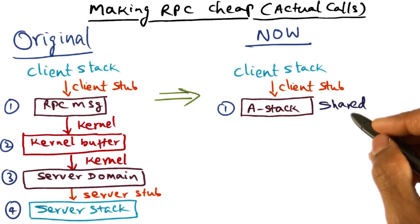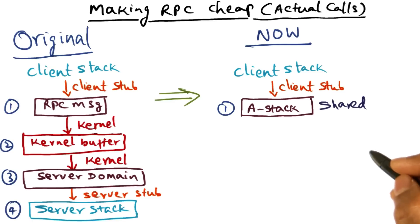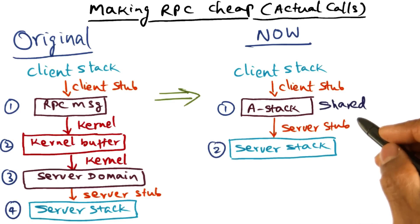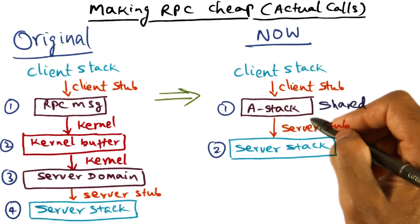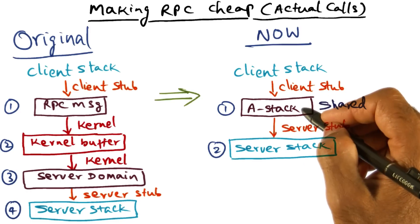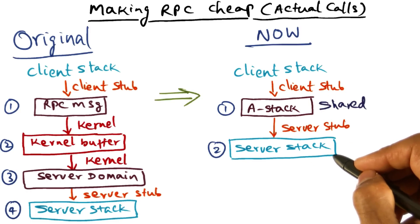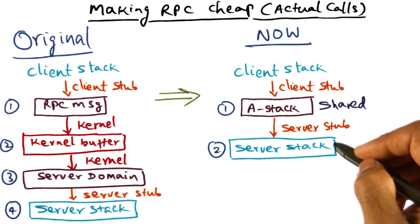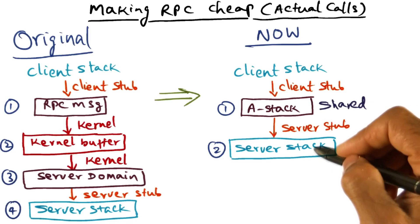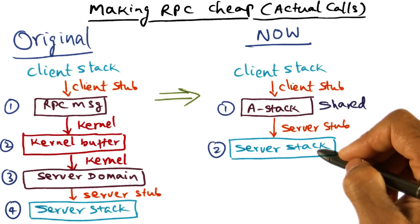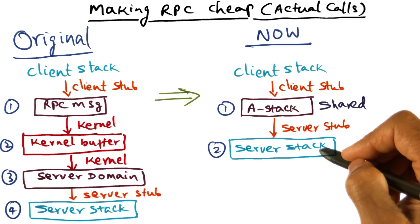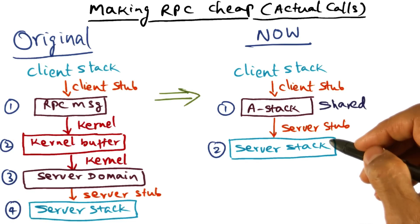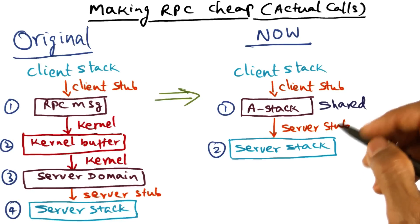The client stub just has to create a copy of the parameters into the A stack, which is of course shared between the client and the server. So what the server stub is going to do is basically take the arguments now sitting in the A stack and copy them into the E stack — the execution stack provided by the kernel for executing the server procedure. Once that is done, the server procedure is ready to be executed in the server domain.